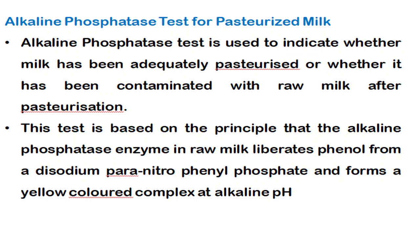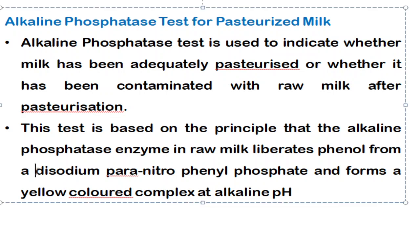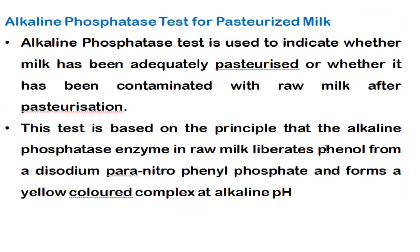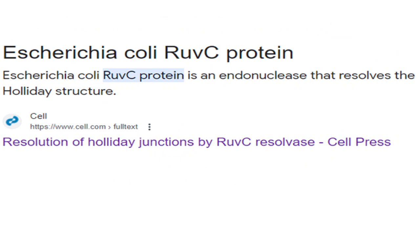The next question: which enzyme is employed in the pasteurization process of milk? The correct answer is alkaline phosphatase. This enzyme is inactivated in pasteurized milk but present in raw milk. The principle is that in raw milk, alkaline phosphatase reacts with the substrate disodium paranitrophenyl phosphate, releasing phenol and producing a yellow-colored compound. This is a colorimetric test used in the dairy industry to determine whether milk has been properly pasteurized.